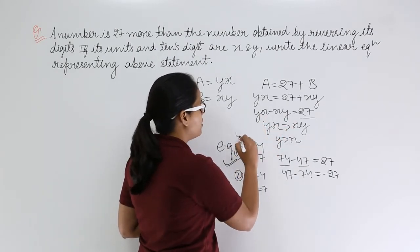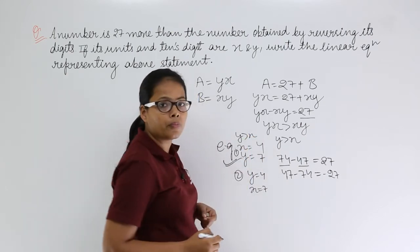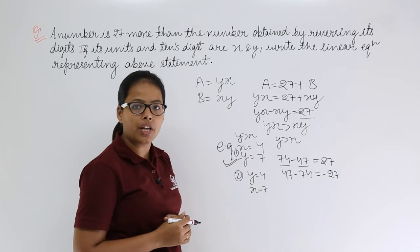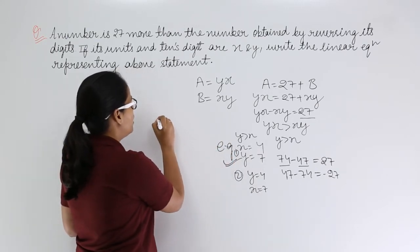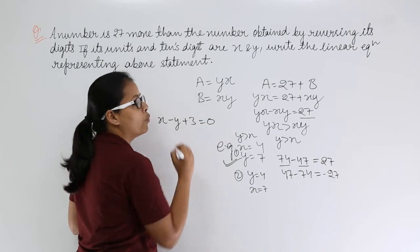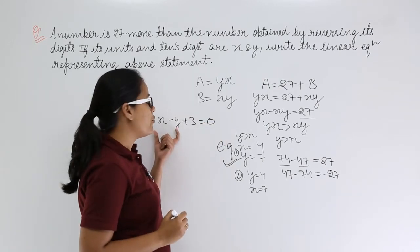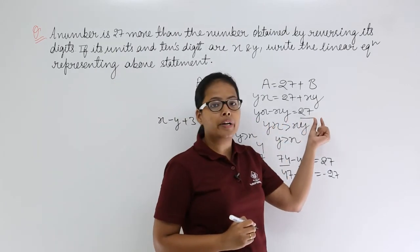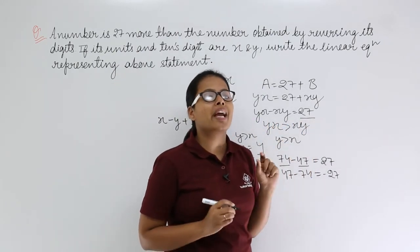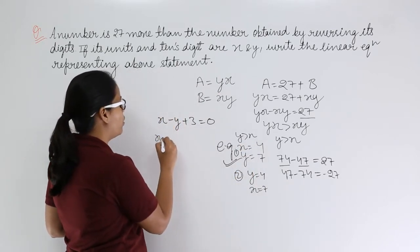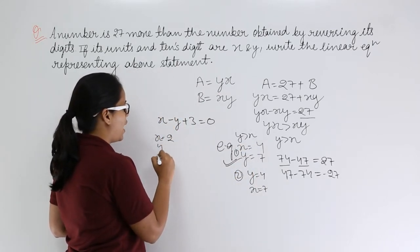So which condition is actually satisfying this equation? Condition where y is greater than x. Now you can see here the difference between y and x needs to be 3. So here x minus y plus 3 will give you always 0, because this difference needs to be equal to 3 to give you the difference of 27.